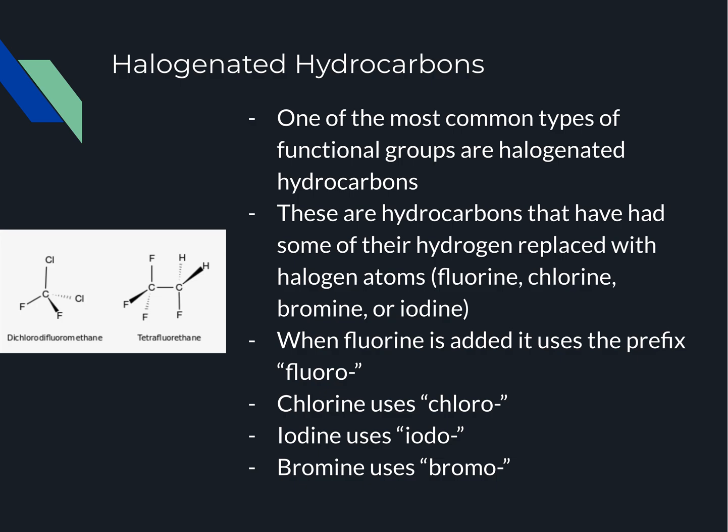The halogens are fluorine, chlorine, bromine, and iodine — group 17 on the periodic table. When they ionize, they all have a negative one charge, but they're not going to ionize here. What they're actually going to do is have a bond capacity of one, just like hydrogen. So you can swap a chlorine or a fluorine for a hydrogen in an organic compound, and structurally it remains fairly similar, although it does give it different chemical properties.